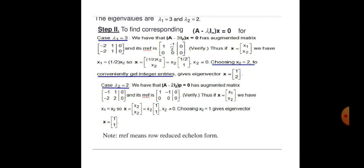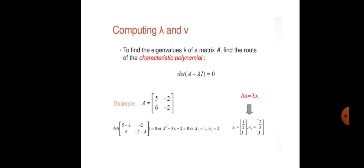For the next example, find the eigenvector lambda of matrix A by finding the roots of the characteristic polynomial, determinant of (A minus lambda I) equals zero. For A equals [5, -2; 6, -2], the characteristic equation gives lambda squared minus 3 lambda plus 2, so lambda 1 equals 1 and lambda 2 equals 2. The corresponding eigenvectors are x1 equals [1, 2] and x2 equals [2, 3], confirming that AX equals lambda X.